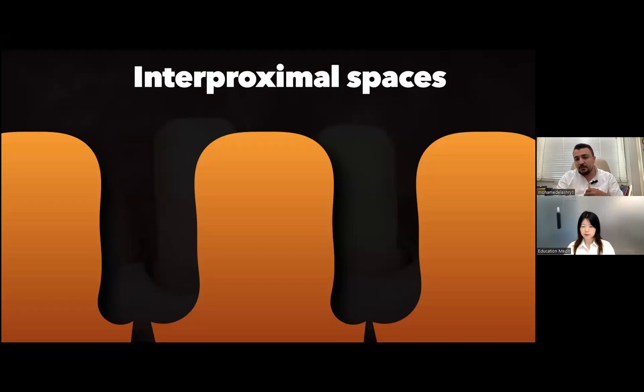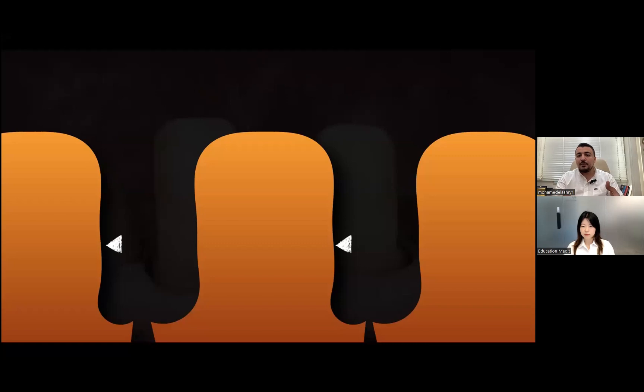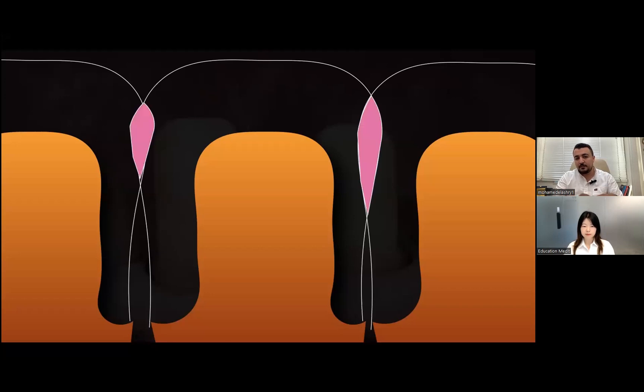If this area of the reduction of interproximal spaces is less than 0.3 or 0.5, the milling machine cannot mill it. And it will mill the restoration with the minimum thickness. So it will end up with a tight contact and incomplete seating of the restoration due to over-contouring of these areas. It's also not the problem of the technician. It's my problem because I didn't know the limitation of the milling machine and the limitation of the minimum thickness of the restoration.